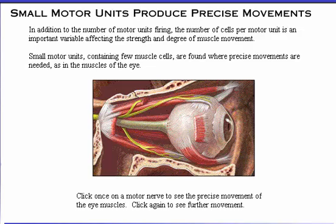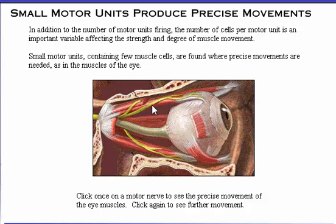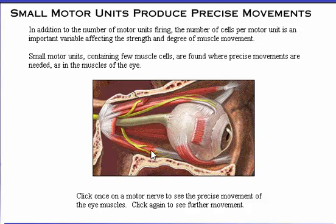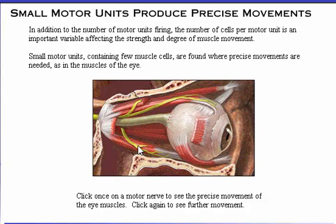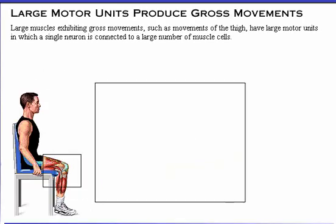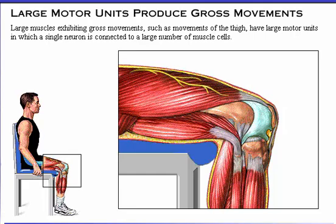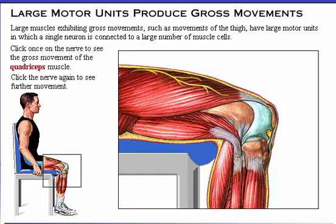Click once on a motor nerve to see the precise movement of the eye muscles. Click again to see further movement. Large muscles exhibiting gross movements, such as movements of the thigh, have large motor units in which a single neuron is connected to a large number of muscle cells. Click once on the nerve to see the gross movement of the quadriceps muscle.